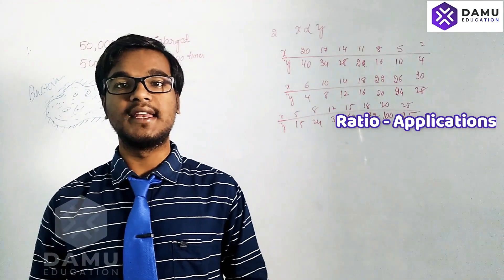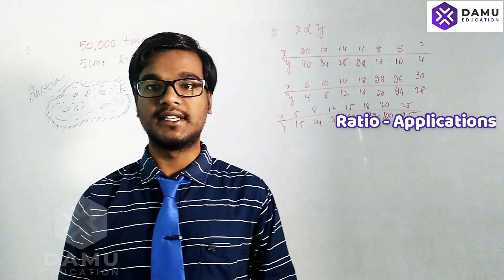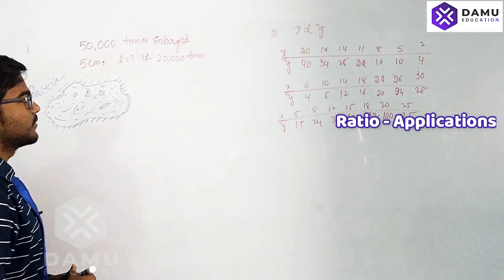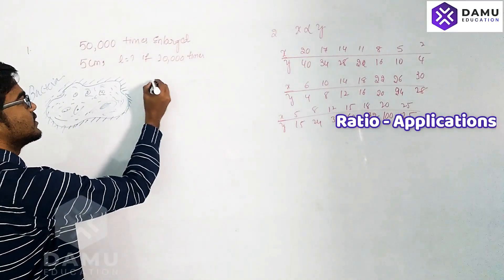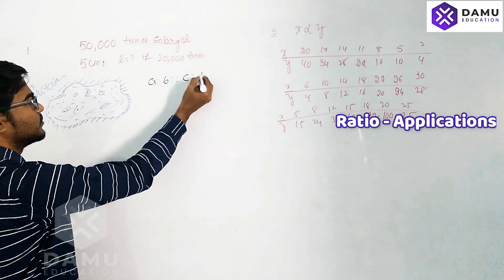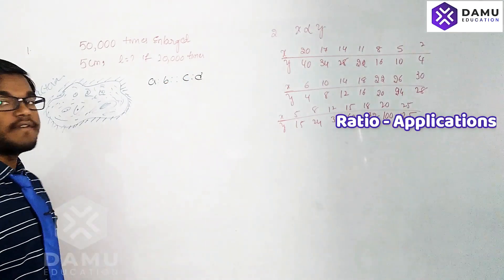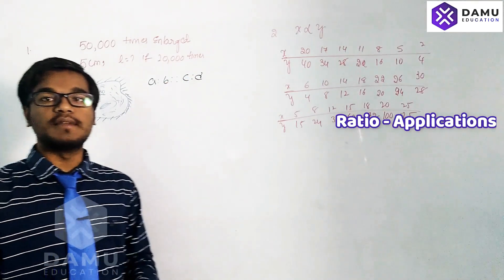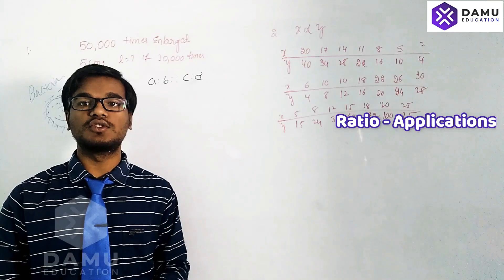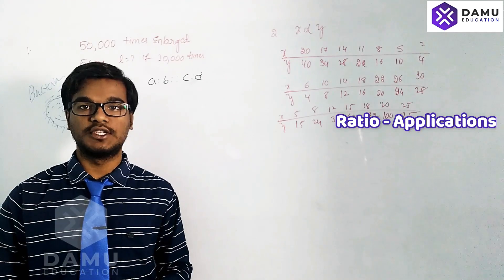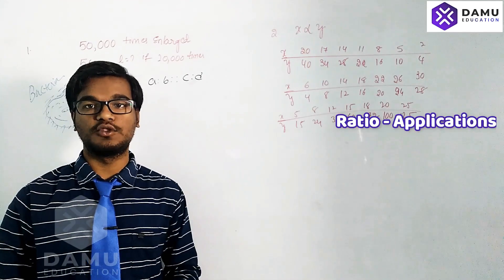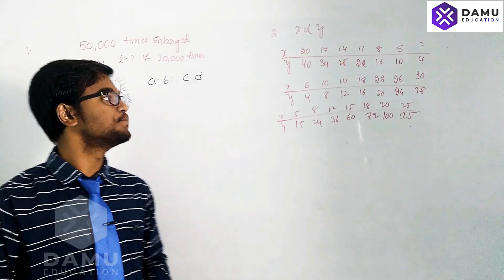In the proportionate method, a is to b as c is to d. Proportionate means we check whether both ratios are proportionate — whether they attain equal proportions or not.